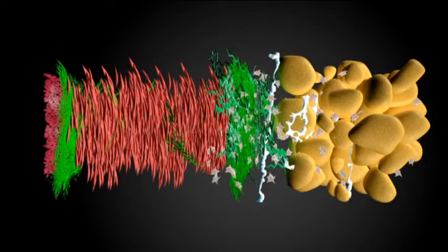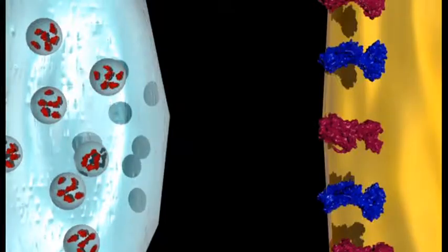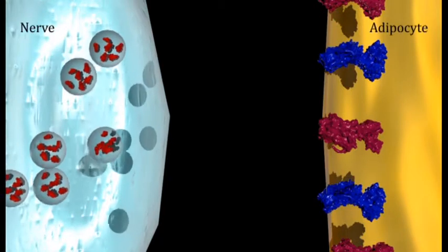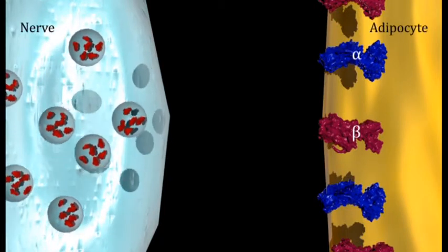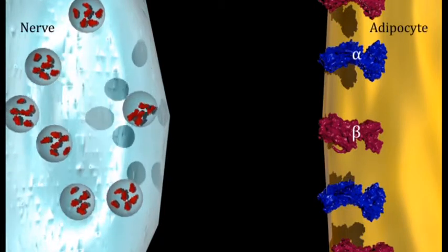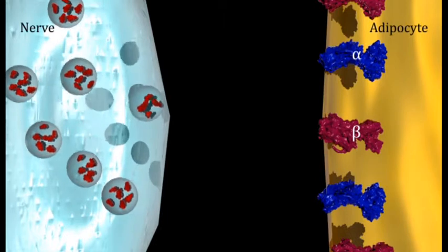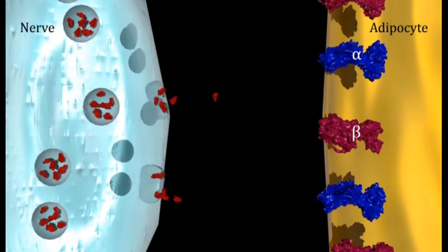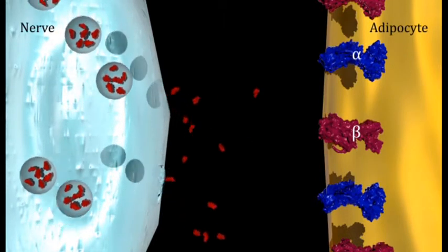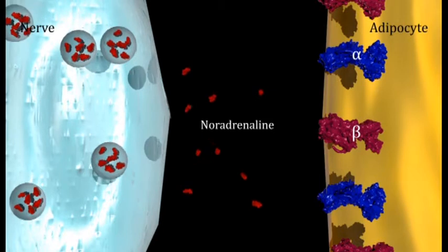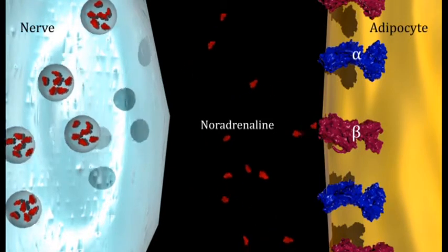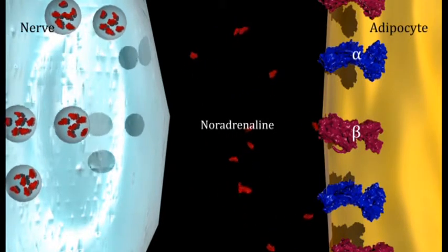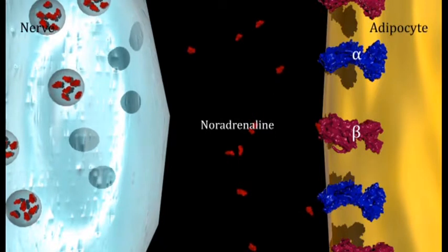Adipocytes express both alpha and beta adrenoreceptors which can be activated by adrenaline and noradrenaline released from the sympathetic nerves. Sensitivity of an adipocyte to a specific neurotransmitter is determined by the distribution of adrenoreceptors on its surface and the concentration of available transmitters.